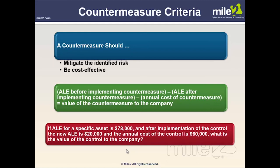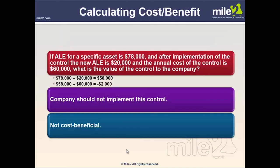For countermeasure value calculation: ALE before implementing countermeasure − ALE after implementing countermeasure − annual cost of countermeasure = value of the countermeasure to the company. Example: ALE before = $78,000; ALE after = $20,000; annual cost of control = $60,000. Calculation: $78,000 − $20,000 = $58,000, then $58,000 − $60,000 = −$2,000. The company should not implement this control because it is not cost-beneficial.